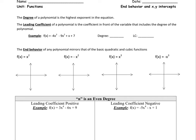First we need to review what the degree of a polynomial is. The degree of a polynomial is the highest exponent in the equation, where the leading coefficient of the polynomial is the coefficient in front of the variable that includes the degree. So here's an example of an equation. If I want the degree, I'm just going to look for the highest exponent. The highest exponent is 3, therefore I have a degree of 3. And if I want to find the leading coefficient, I find the degree and look at the number in front. The number in front is negative 4, therefore my leading coefficient is negative 4, LC for short.